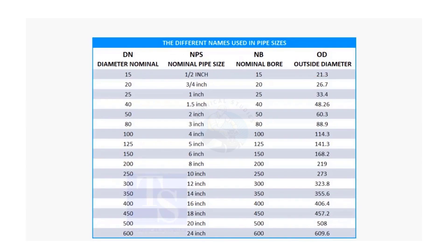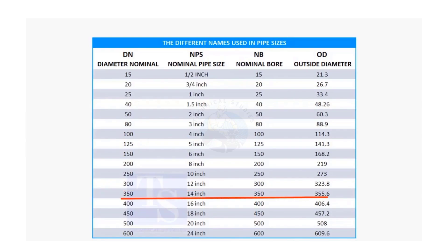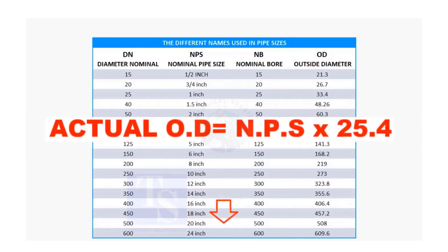In the case of nominal pipe size, the NPS and actual pipe OD are different up to 12 inches. Up to 12 inch pipes, you may need to memorize the actual OD size. For 14 inch and above, multiply the inch size by 25.4 to obtain the actual OD of the pipe.